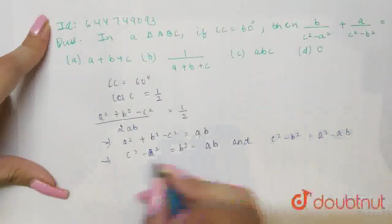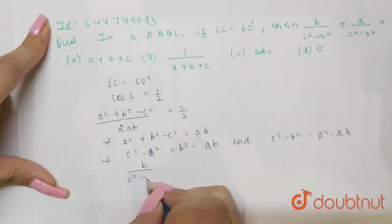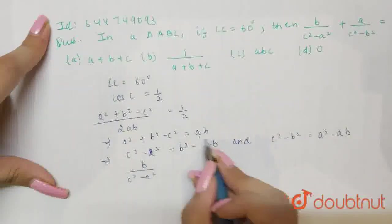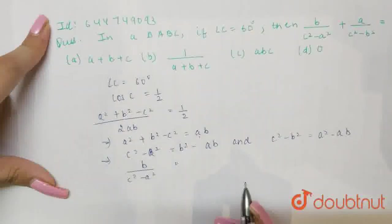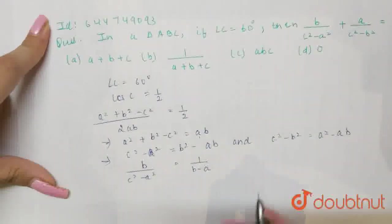Now, from here if I find the value of b upon c square minus a square, that is I divide this equation, that means this will become in denominator and b will be in numerator. This will become 1 upon b minus a because b will be common.